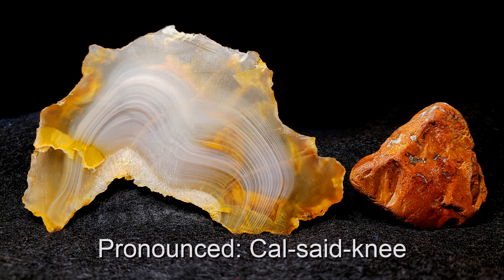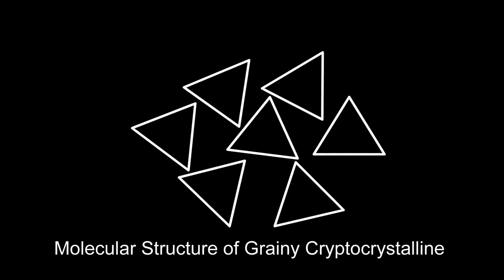Just to make it clear: both agate and jasper are chalcedony, pronounced 'cal-sed-o-nee.' It's just that one is fibrous, parallel, and organized, and the other is grainy, non-parallel, and disorganized. It's not as big, scary, or hard to understand as you think once you start breaking the words down a little bit.